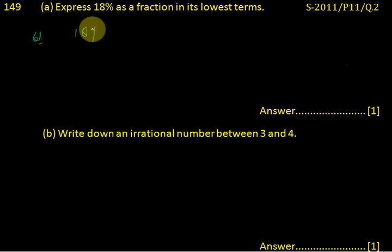18 percent can be written as 18 upon 100. For the lowest term, we must divide both numbers by a common number.